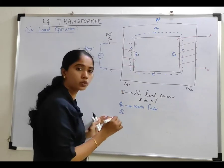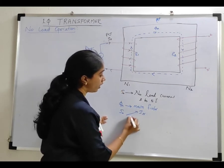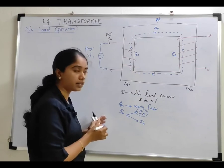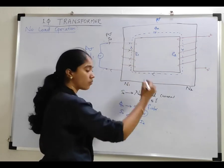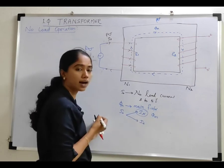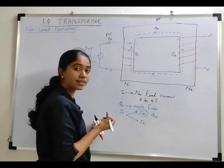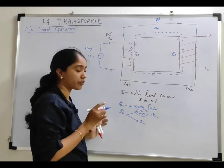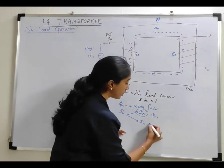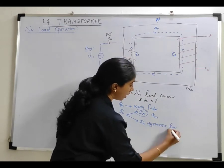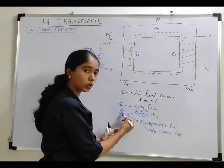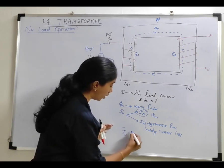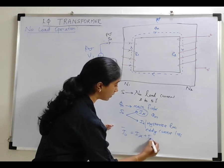This I0 has two components: the first is Iμ and the second is Ic. Iμ is the magnetizing component of the no-load current, which is used to set up the magnetic flux φm — so φm is due to Iμ. Ic is the core loss component. Because of the varying flux set up in the core, there are two losses associated with the core: hysteresis loss and eddy current loss. The no-load current I0 supplies both Iμ and Ic. So I can write: I0 is the vector sum of Iμ and Ic.